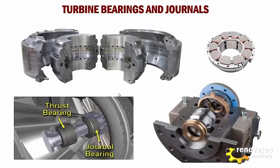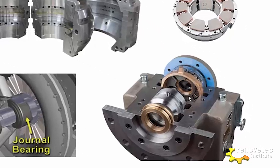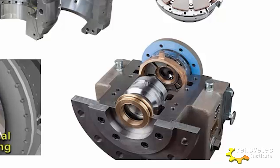In this picture we can see better the different elements that compose the bearings — thrust bearings and journal bearings. This is a journal bearing. The anti-friction material, the babbitt material, is in contact with the collar. Here is the collar, and this is the journal bearing. And in this space is the journal bearing, and this is the thrust bearing.